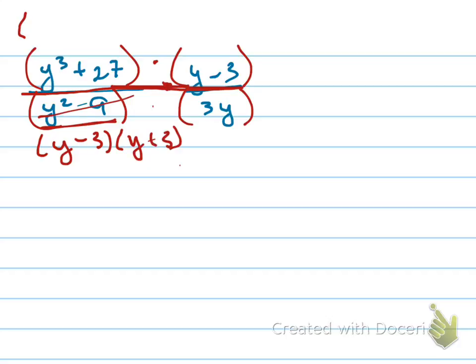This one is one of those SOAP problems. So this is a little bit trickier. It's going to be the same sign, opposite sign, always positive. That's SOAP, in case you don't remember that. And what's being cubed? A y is being cubed and a 3. So we put y and 3 there. We put y squared here and 3 squared here. And then we put y times 3 here. And that's how you factor a sum of perfect cubes.